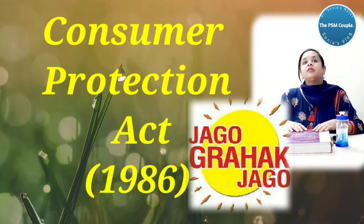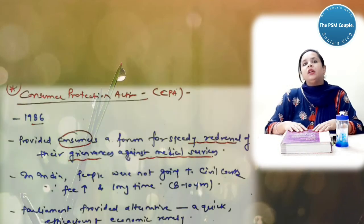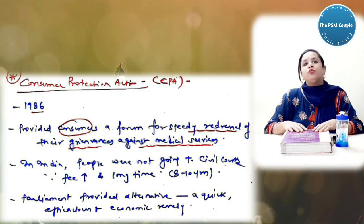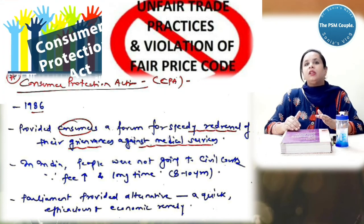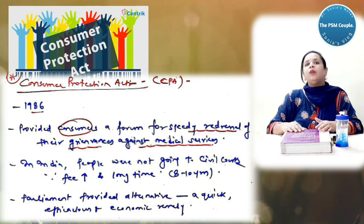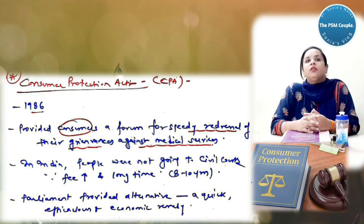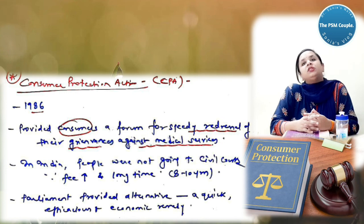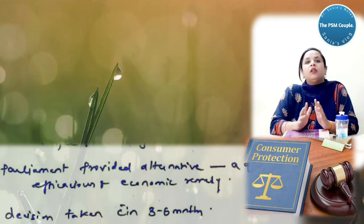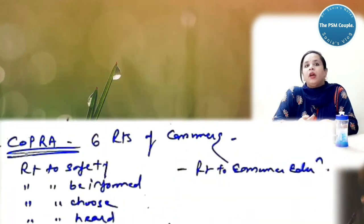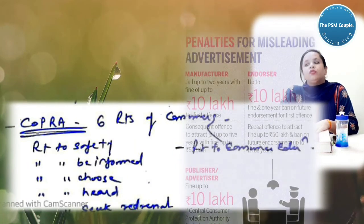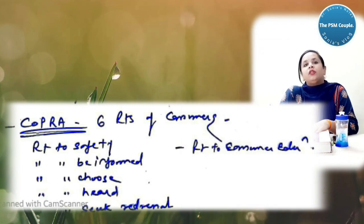Now coming to the next, Consumer Protection Act. It came in 1986 and it provided consumers a forum for speedy redressal of their grievances against medical services. In India, people were not going to civil courts because there were a lot of cases. Parliament provided an alternative, quick, efficacious and economic remedy in which the decision will be 3-6 months. Six consumer rights: right to be informed, right to choose, right to be heard, right to seek redressal, and right to education.